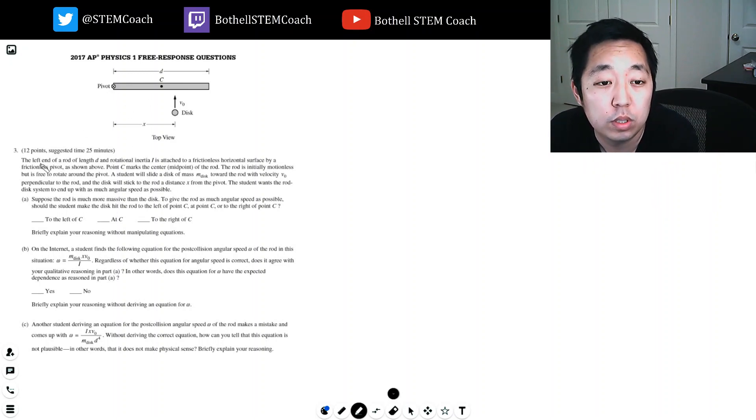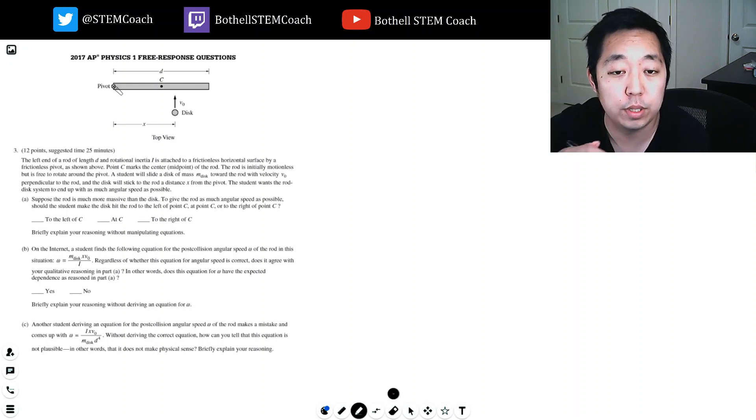The left end of a rod of length D and rotational inertia I is attached to a frictionless horizontal surface by a frictionless pivot as shown above. Point C marks the center of the rod. The rod is initially motionless but is free to rotate around this pivot, so it kind of swings up and down.